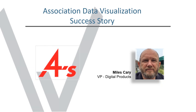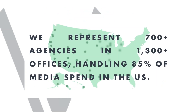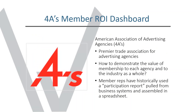You're seeing a picture here of Miles Carey, VP of Digital Products, the person we worked closely with on this project. The 4As is a trade association with between 600 and 700 member agencies. As a trade association, they have a very complex membership model where some holding companies may have 200-plus subsidiaries and branch offices. They represent 1,300-plus offices around the United States, handle 85% of the media spend in the US, and have been around 100 years.